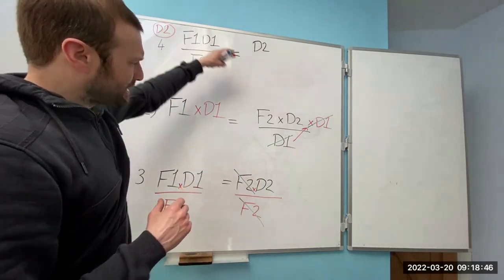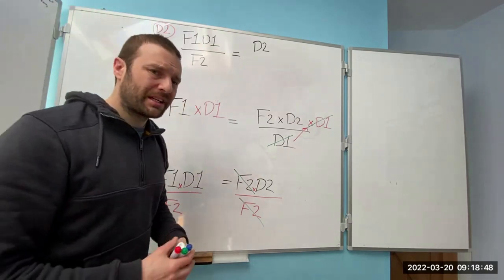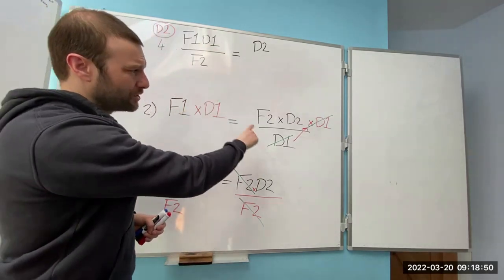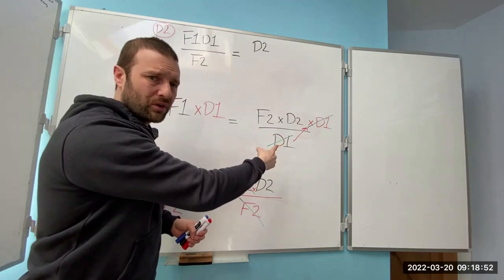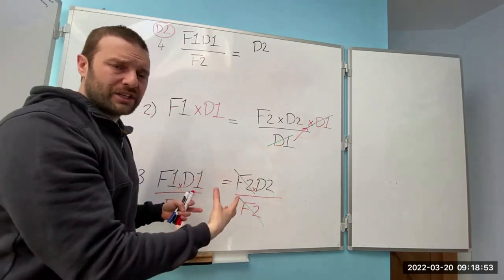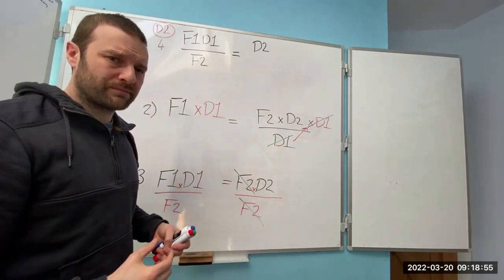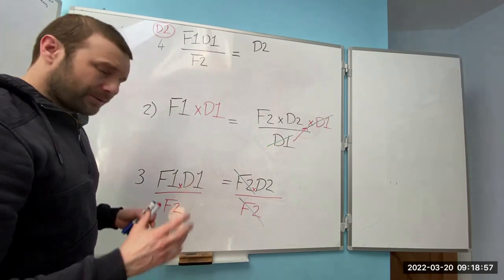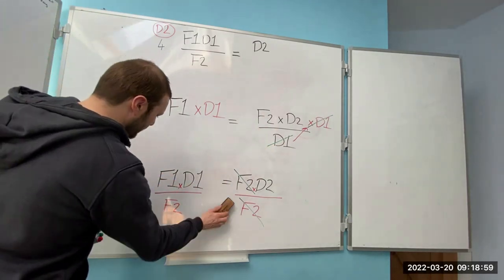If you write it out like this and you do make a mistake, it's easy to look through and think, 'That's where I went wrong,' then change it, learn from it and move forward. So the second formula I want you to learn is the formula for transformers.